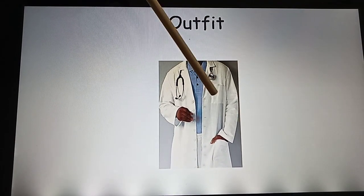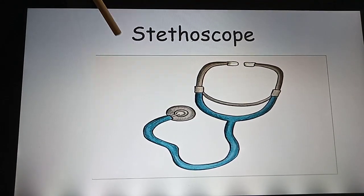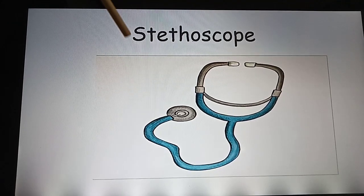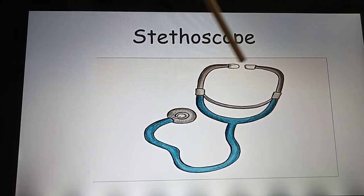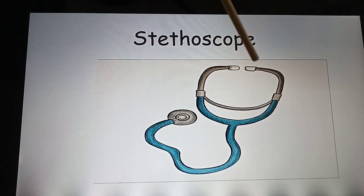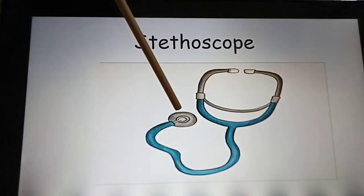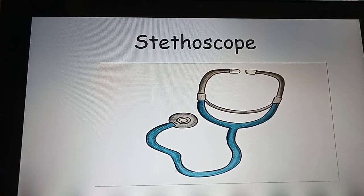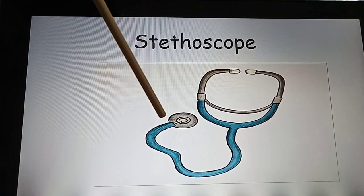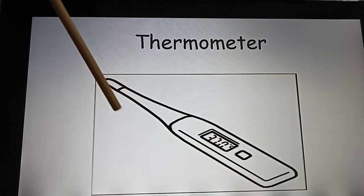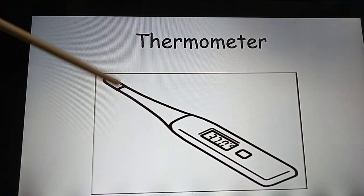The doctor always wears a white coat. This very important instrument is called a stethoscope. These ends are put in the ears, and this end is placed on the patient's chest so that the doctor can hear the heartbeat and check what has happened to the patient.